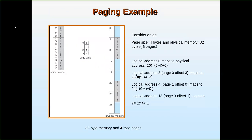For logical address 13, this is in page three, which is present in frame two. Two into four equals 8, plus offset one equals 9. So logical address 13 maps to physical address 9 — the value N is found at that ninth address in physical memory.